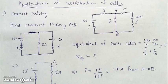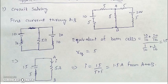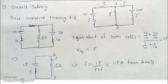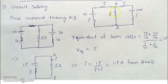Now we'll look at the applications of cell combinations. The first application is solving a circuit. There's a circuit with two cells and a few resistances. Resistances in series can be added together — these two give 10 ohms and again these give 10 ohms. The two cells have like polarities and are in parallel.